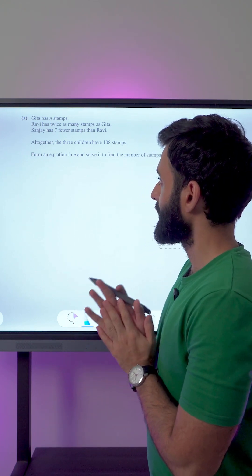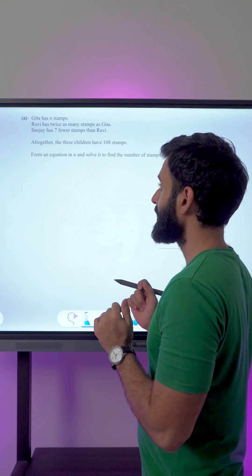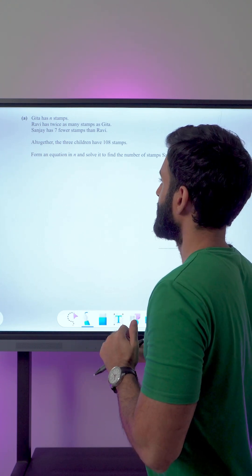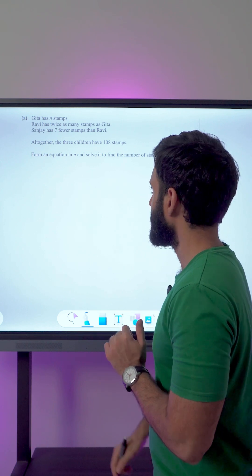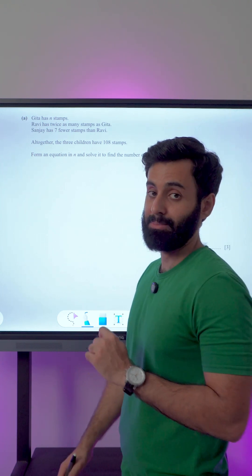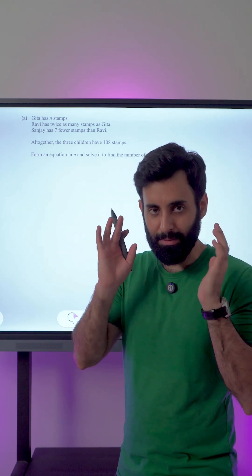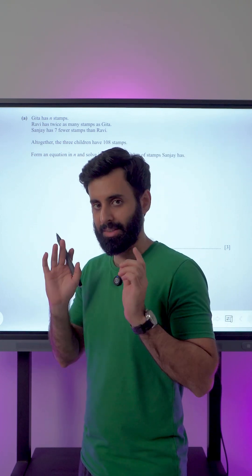Geeta has n stamps. Ravi has twice as many stamps as Geeta. Sanjay has seven fewer stamps than Ravi. Altogether the three children have 108 stamps. Form an equation in n and solve it to find the number of stamps Sanjay has. Okay, so whenever you're solving a question like this one or any word problem for that matter...